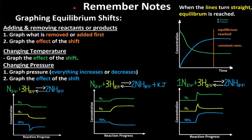These are the key remember notes. If you understand everything here, you should be able to describe equilibrium shifts for a reaction on a graph. When the lines turn straight, equilibrium is reached because reactants and products are at a constant concentration. For adding and removing reactants or products: first graph what is removed or added, then graph the effect of the shift.